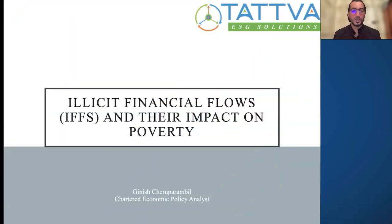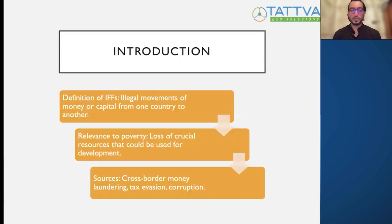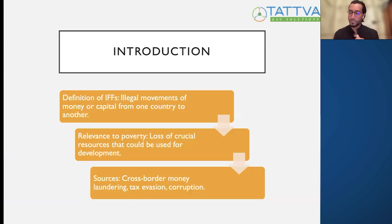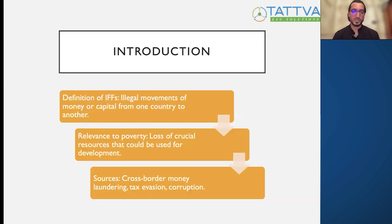Today, the topic is illicit financial flows and their impact on poverty. The overview covers what we mean by IFF — illicit financial flows from countries — its correlation to poverty, its relation to some development indicators, a few country-based examples, and a conclusion. IFF is basically the illegal movement of money or capital from one country to another.